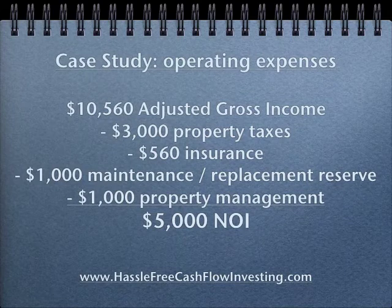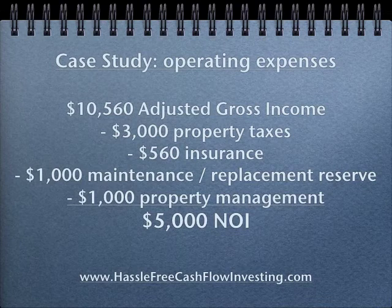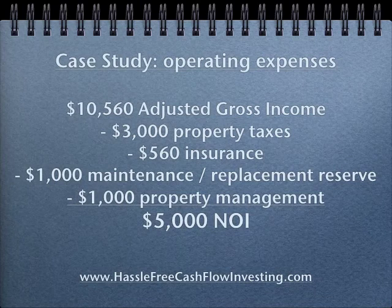Here's a case study. Just for simplicity, I have a $10,560 adjusted gross income — this came from lesson three as a rollover. Let's assume I have $3,000 in annual property taxes, $560 in annual insurance, $1,000 maintenance replacement reserve, and $1,000 of property management.